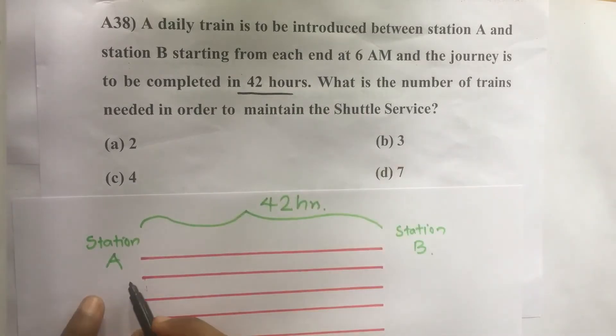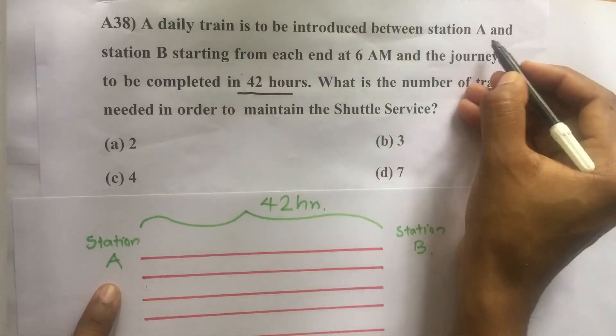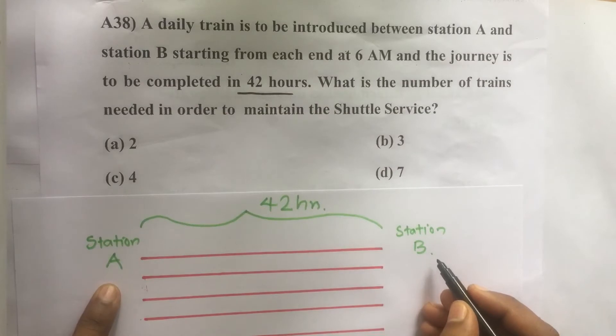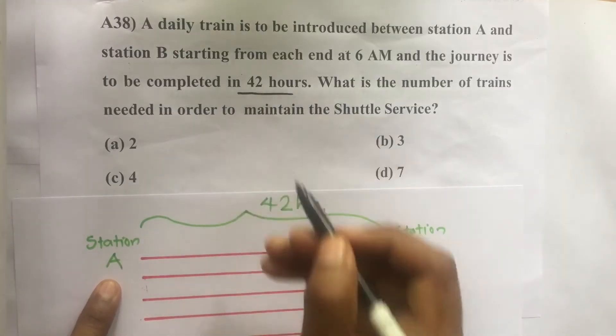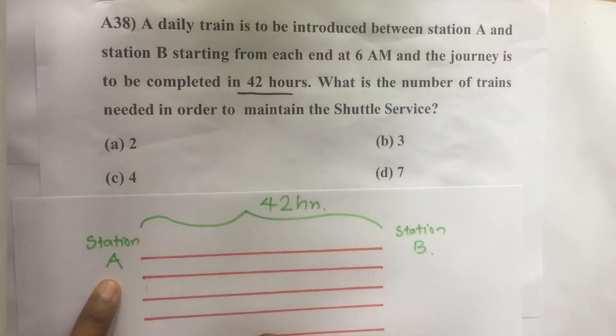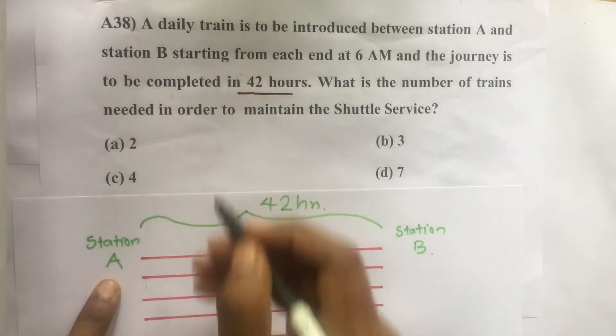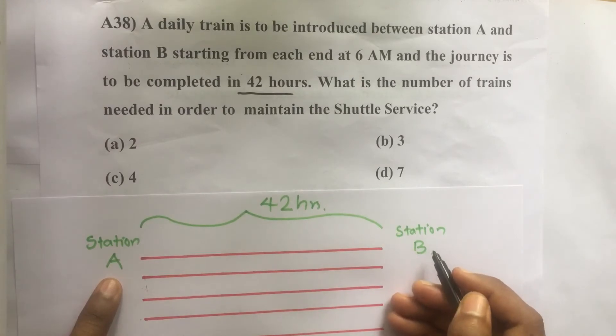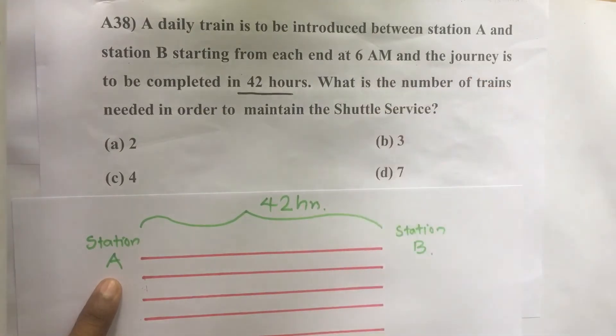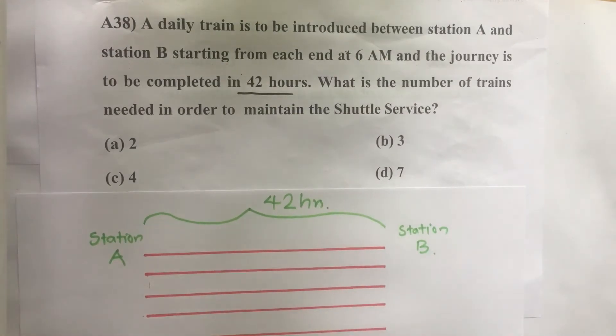So here there are two stations, station A and station B. The time needed to travel from station A to station B or B to A is 42 hours. We have to introduce train service from station A and also from station B every day at 6 AM. So how many trains are needed in order to maintain such a service? That is what we have to find.